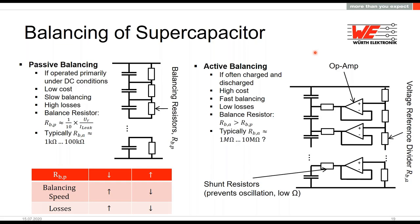To prevent this, it's necessary to balance the charge across supercapacitors. There are two options: passive and active balancing. Passive balancing is suitable for primarily DC conditions — it's low cost but slow and has high losses. Active balancing is used when you have frequent charge and discharge cycles — it's higher cost compared to a resistor for passive balancing, but it's fast and has no losses. If you use a very low passive resistor for fast balancing, you'll have high leakage current.